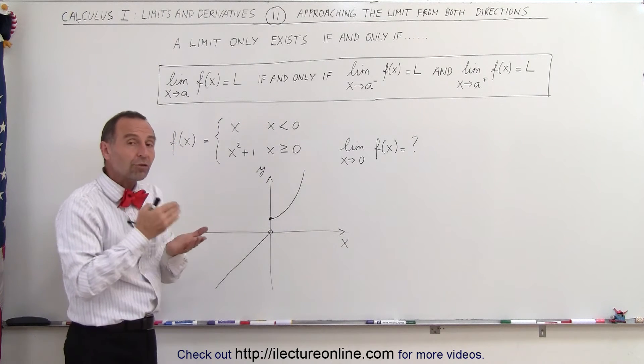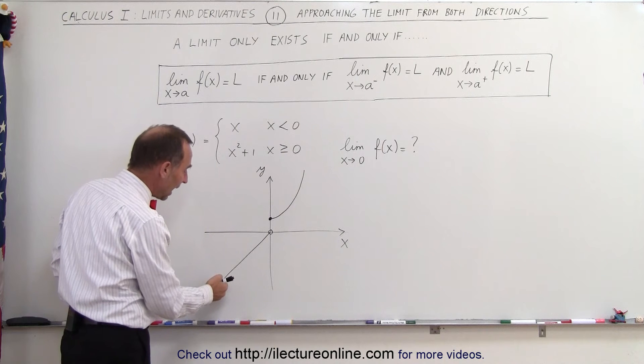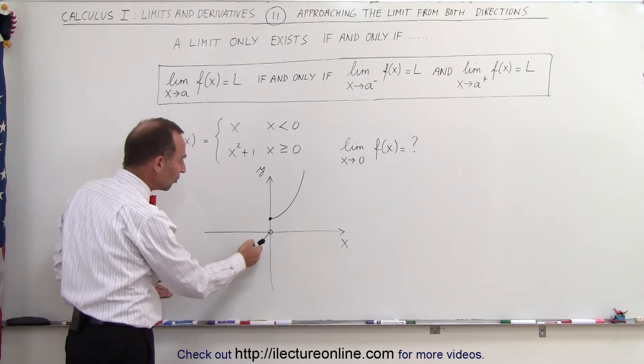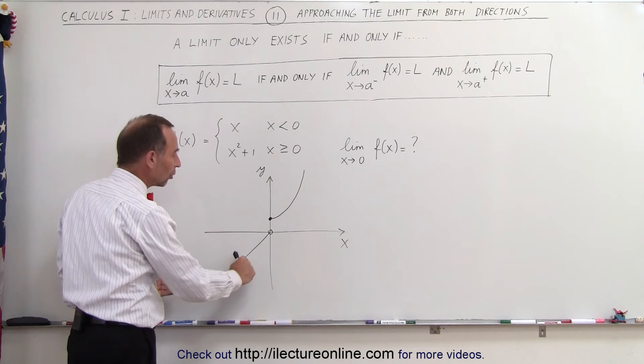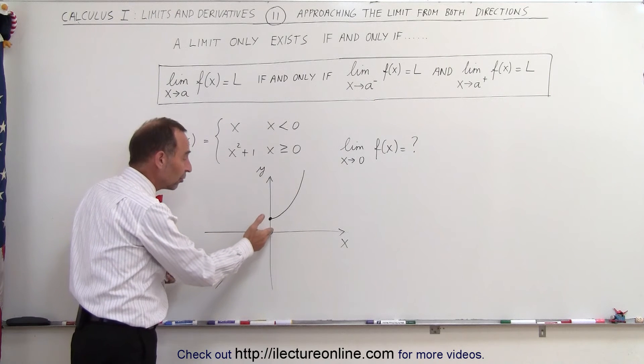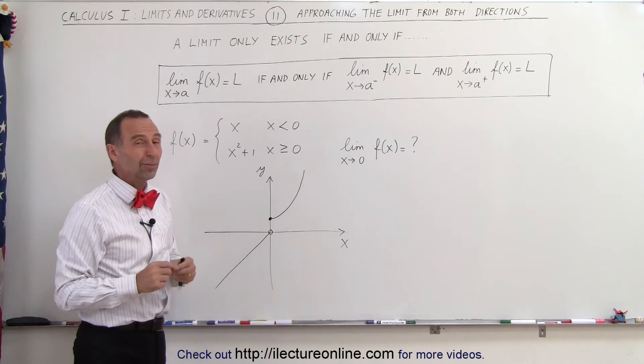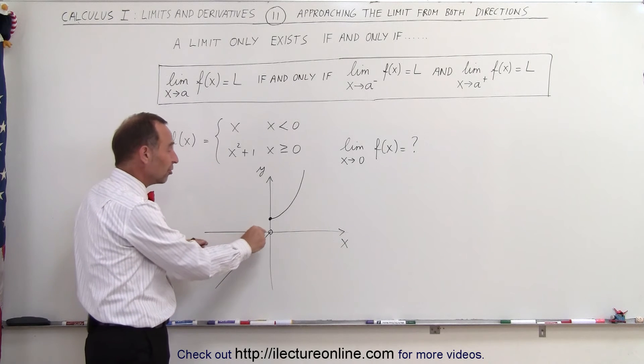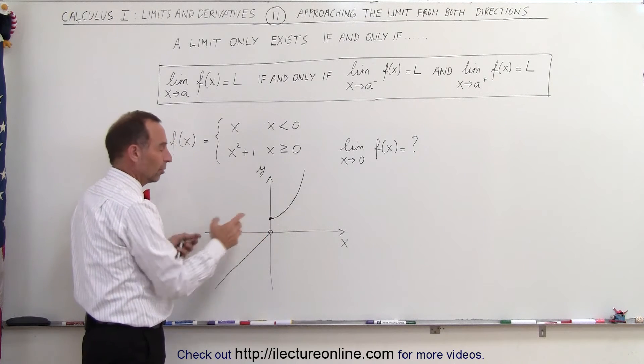So when we approach it from the left, you can see that as x gets closer and closer to 0, y will approach closer and closer to 0. So it would appear that in the limit, as x goes to 0, y would be equal to 0. But then when we actually plug in 0 for the function, we get y to be equal to 1.